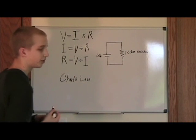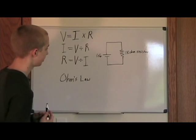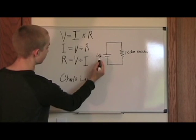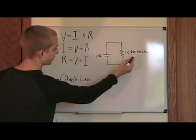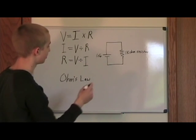I drew a small schematic over here of a circuit to demonstrate Ohm's Law. We have a 1.5 volt battery and a 1 kiloohm resistor, which is the same as 1,000 ohms.